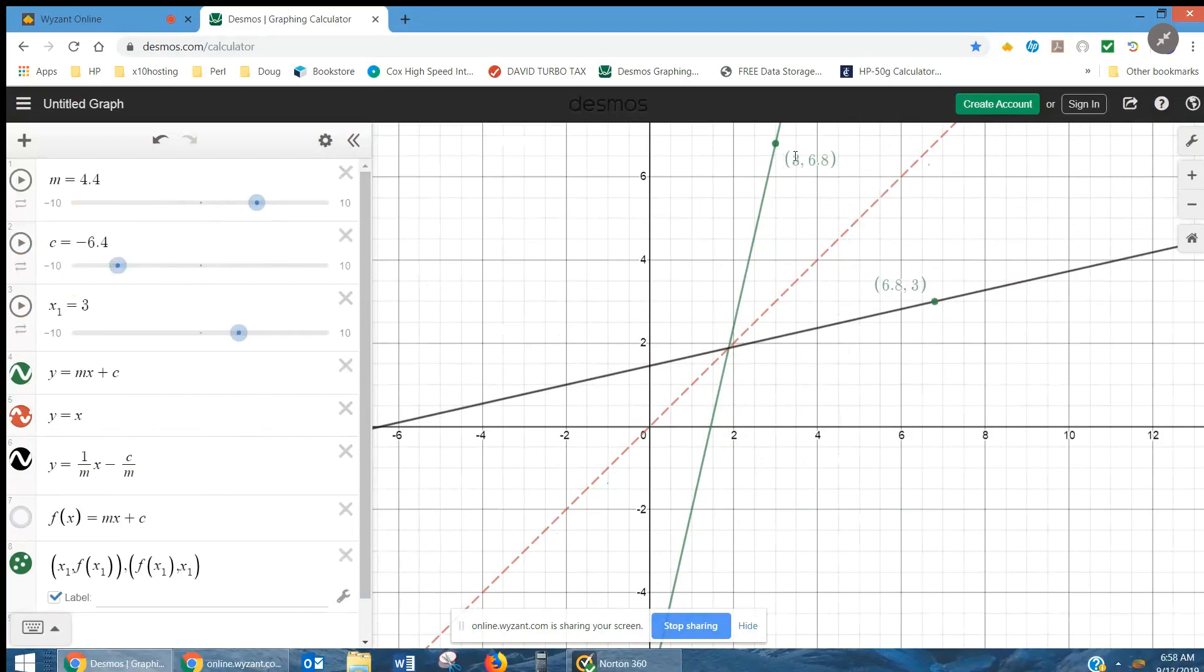Here is like 3 comma 6.8 and its reflection is the point 6.8 comma 3. In other words, all you do is interchange the x and the y coordinates to reflect the point over the line y equals x.